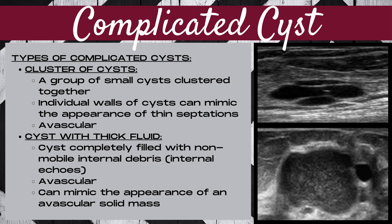The fourth type of complicated cyst is a cyst with thick fluid, where the cyst is completely filled with non-mobile internal debris. There will be low-level internal echoes throughout the mass, and the mass should be avascular. This type of complicated cyst can mimic the appearance of an avascular solid mass.